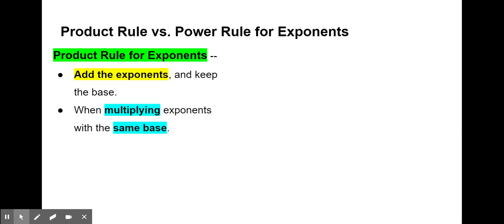We use this when we're multiplying exponents with the same base. So you need those two conditions: multiplying the exponents, and it has to be the same base. So if we have an example — a to the fourth power times a to the fifth power — we see it's multiplying. That dot means multiplication, and we have the same base, base of a. So for this one, we can apply the product rule. We'll add the exponents. We get a to the fourth plus fifth power, which gives us a to the ninth. That's our answer for product rule for exponents.